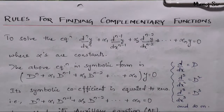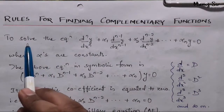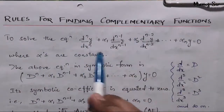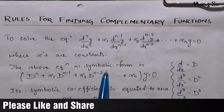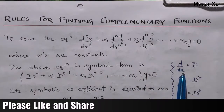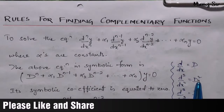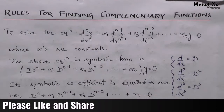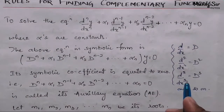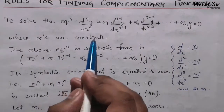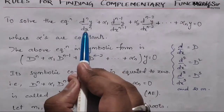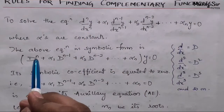Let us start to solve this equation. Suppose we have this equation where alphas are constants. The above equation in symbolic form can be written as shown. Basically, d/dx is the operator D. Similarly, d²/dx² is D squared, d³/dx³ is D cubed, and so on. The nth derivative of y with respect to x can be rewritten as D to the power n times y.